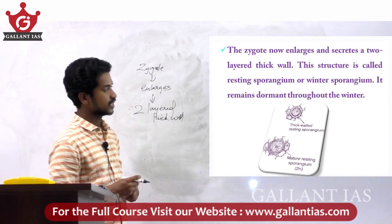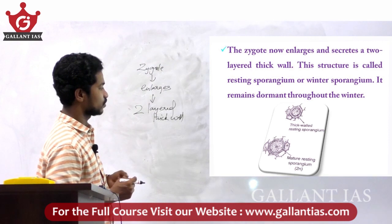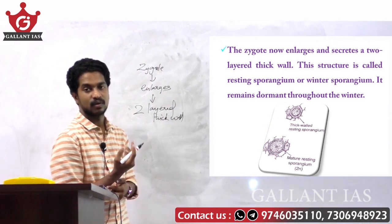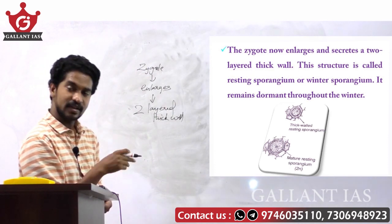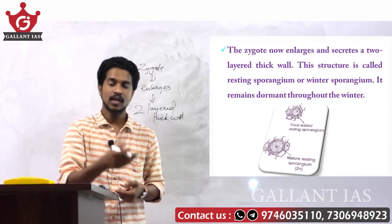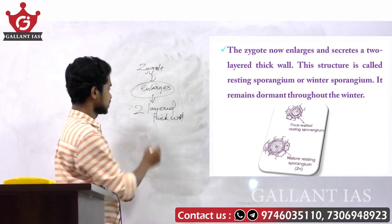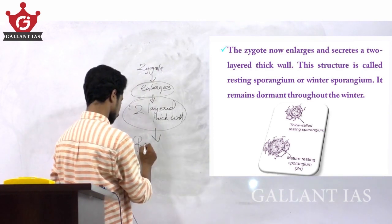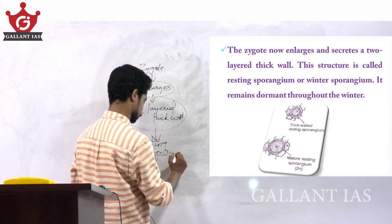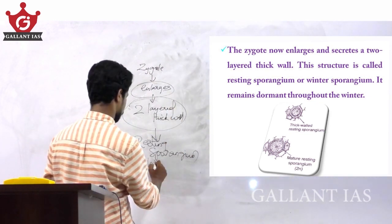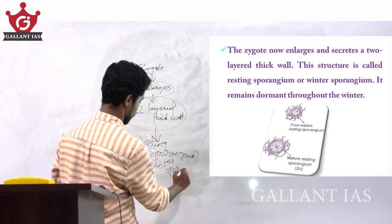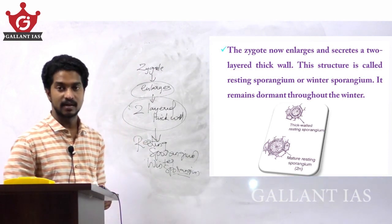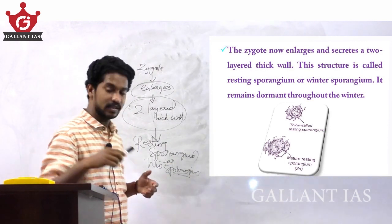This structure is called the resting sporangia or winter sporangia. It remains dormant throughout the winter. The two-layered thick wall structure — the resting sporangia or winter sporangia — remains dormant throughout the winter.